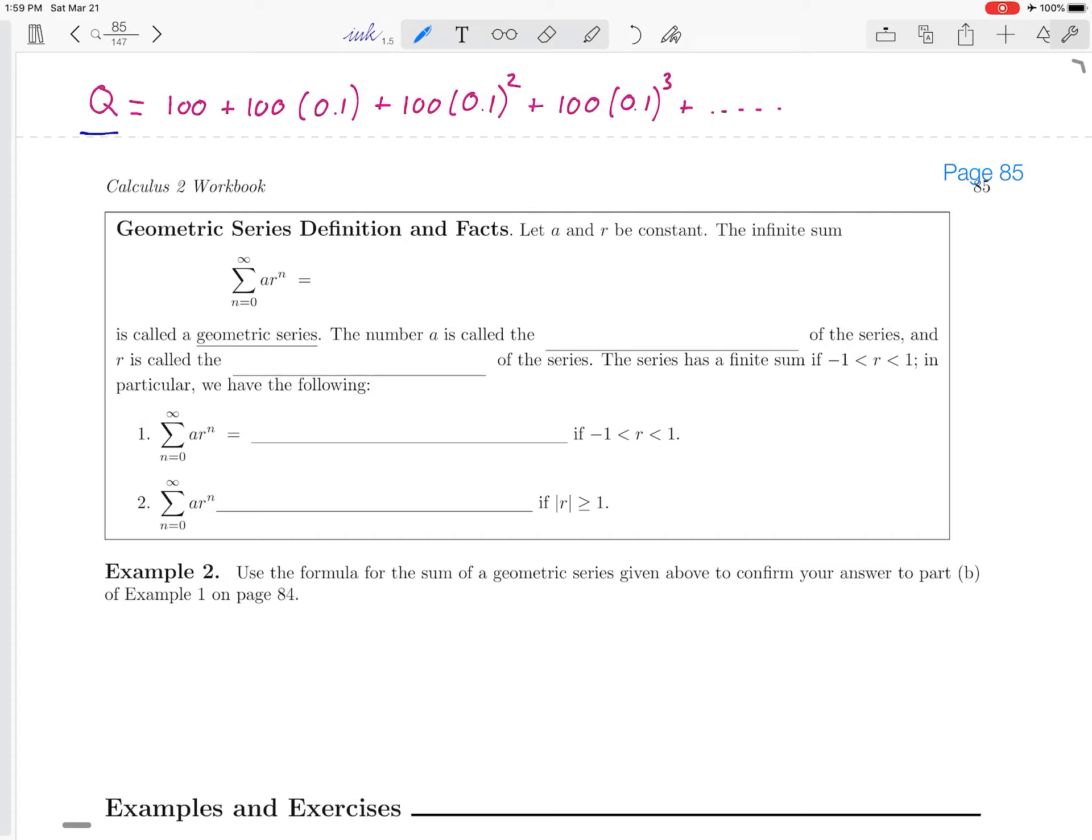An infinite sum like this is also called a series. Now, in this particular example, when you're looking at the structure of this series, you see that it starts with 100, in this case it was 100 milligrams of the drug, and then each successive term is multiplied by 0.1.